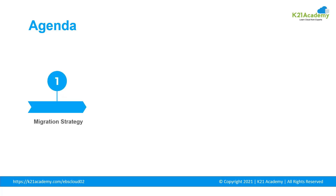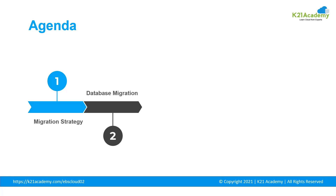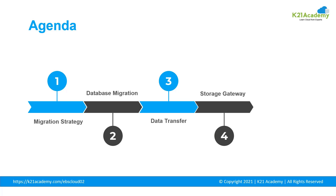Let us take a quick glance at the agenda. Firstly, we will try to understand the migration strategy, and then we will understand database migration ways: physical database migration, logical database migration, offline migration, and online migration. We will also go through database migration methods, data transfer, storage gateway, and connectivity options — public network, VPN, and fast connect.